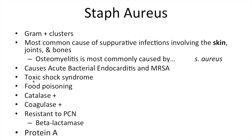Staph aureus also causes toxic shock syndrome and food poisoning. Key properties to remember: it's catalase positive, coagulase positive, resistant to penicillin via beta-lactamase, and it has protein A.